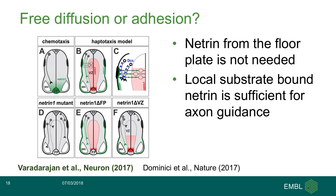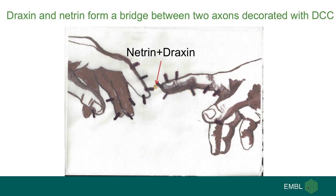New data published by the Schedertal and Butler labs seem to favour local expression. Our structural data are very instructive in this respect. We propose that when Draxin is bound to DCC on a growth cone of an axon, it can help recruit Netrin. Subsequently, Netrin can bind to DCC expressed on a second axon to form a bridge. This may provide a molecular basis for cell adhesion between two axons, leading to fasciculation.